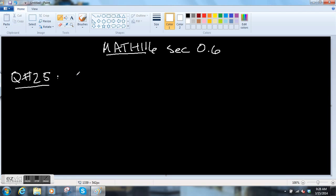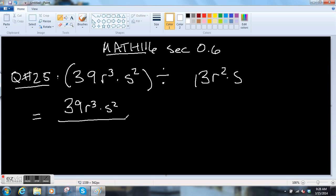So here's question number 25 from your homework. We have 39r cubed times s squared, that whole thing, divided by 13r squared times s. So the easiest way to do this problem is to write it out in this form. You can cancel when you have these top and bottom.